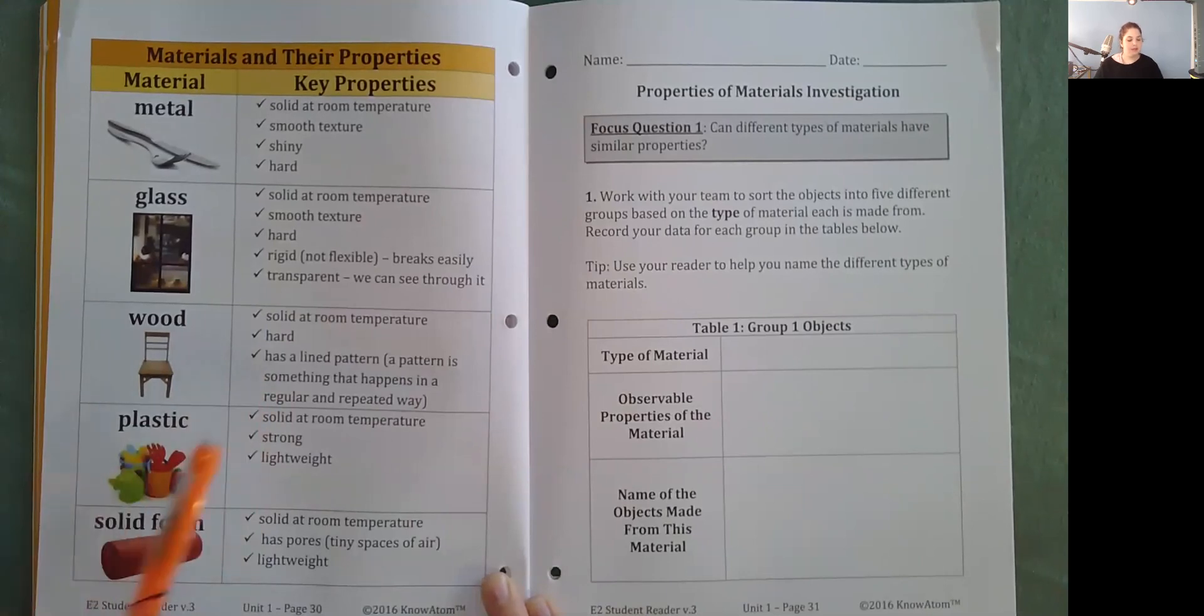Plastic. Solid at room temperature. Strong. Lightweight. Solid foam. Solid at room temperature. Has pores or tiny spaces of air. And it's lightweight.